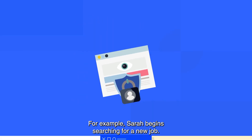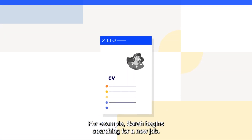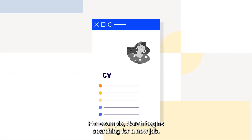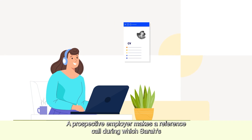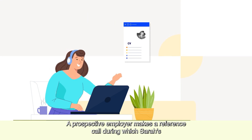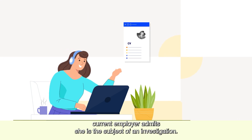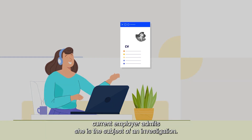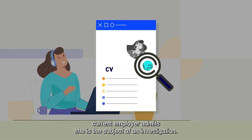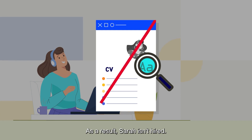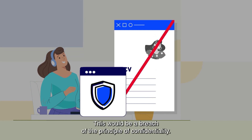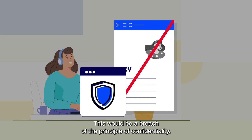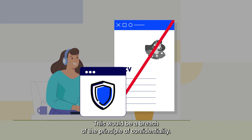For example, Sarah begins searching for a new job. A prospective employer makes a reference call during which Sarah's current employer admits she's the subject of an investigation. As a result, Sarah isn't hired. This would be a breach of the principle of confidentiality.